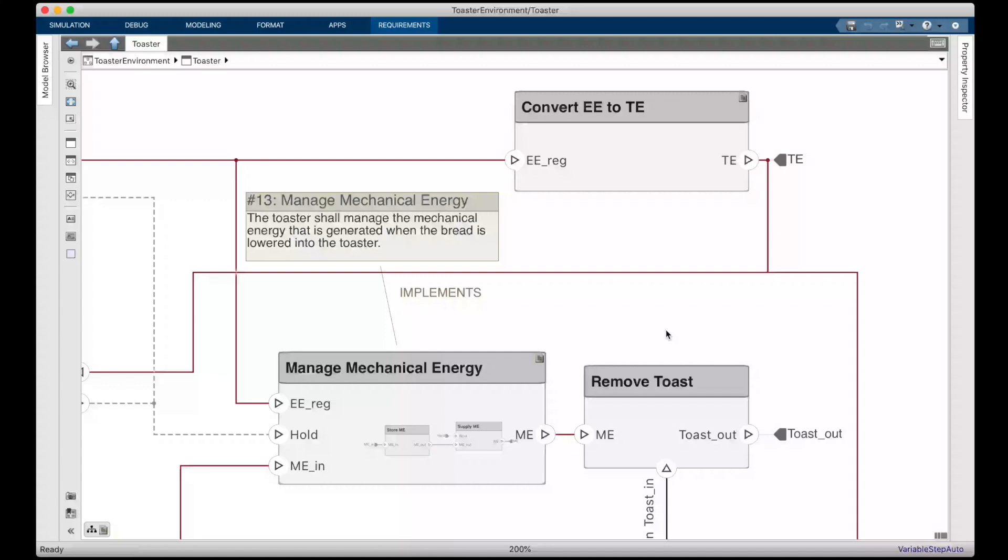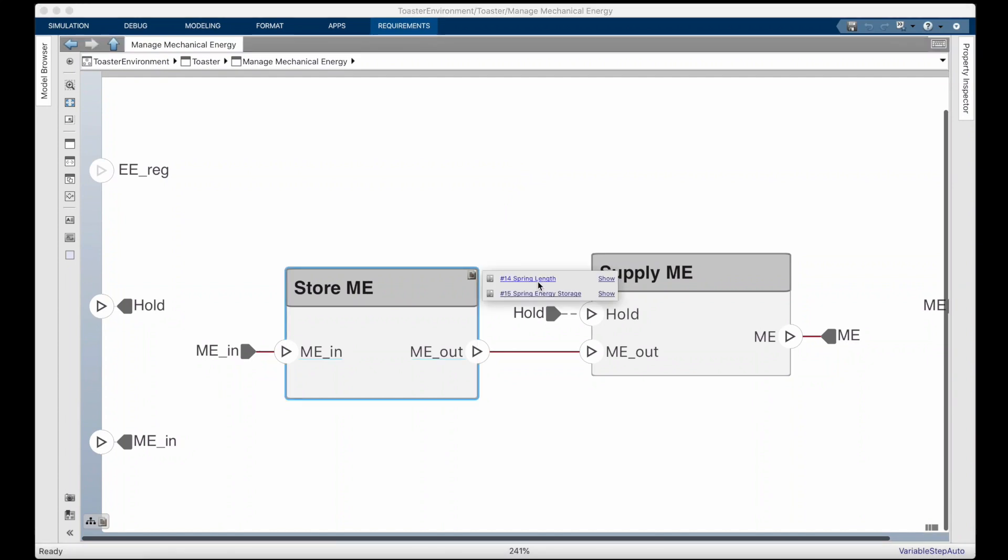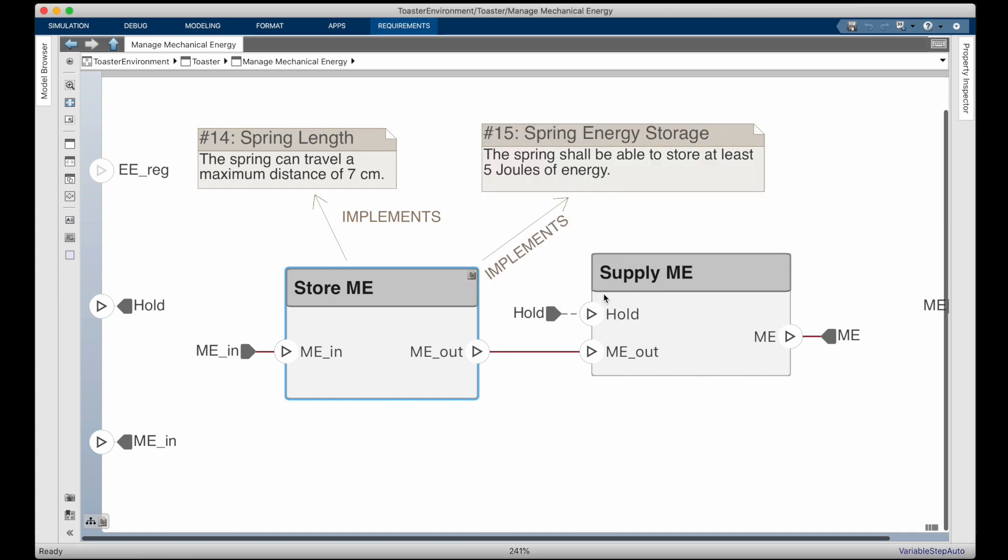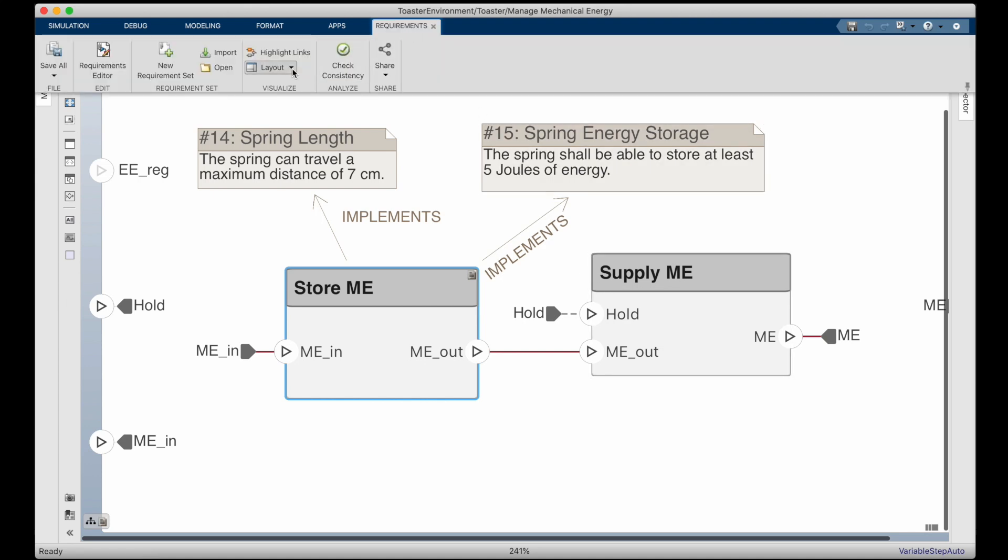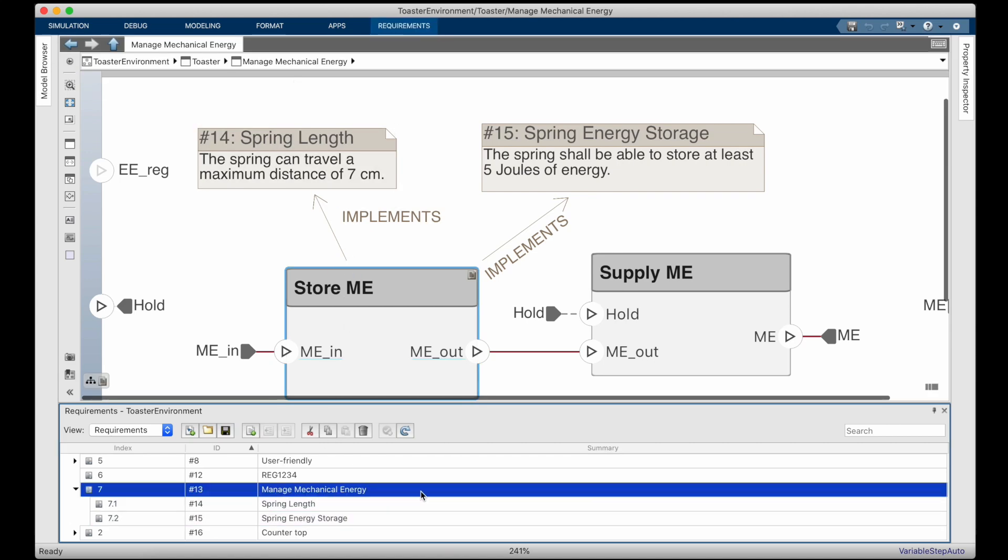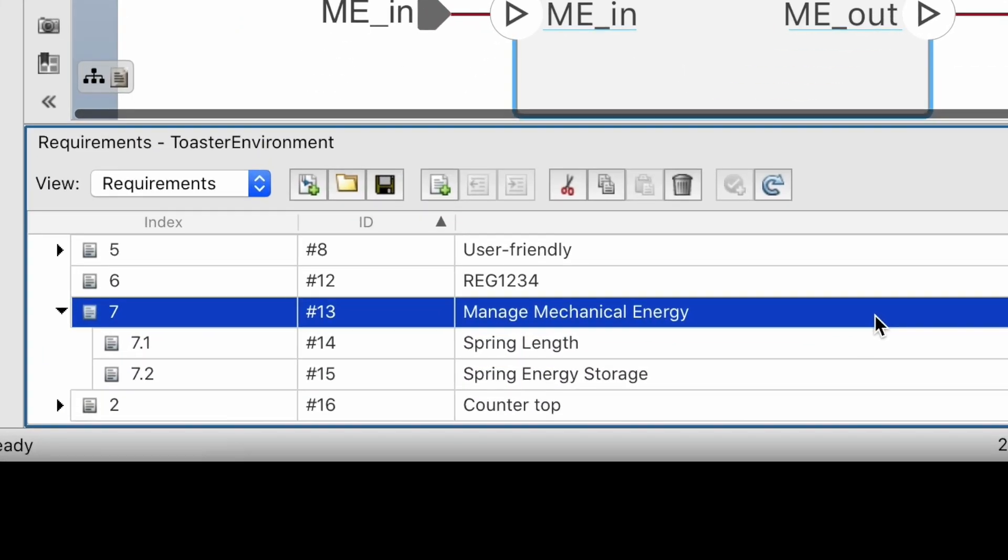We may make a design choice to store the mechanical energy in a spring. That's an implementation we've decided on, in which case we could write lower level requirements for the spring that state performance measures, like the maximum distance the spring can travel, and how much energy it needs to store. This would give us an idea of what kind of spring we need to design or purchase. So hopefully you can start to see the back and forth between further refining the requirements and further refining the design. And stacking all of these parent and child requirements together forms a hierarchy. You can see how spring length and spring energy storage are both child requirements to managing mechanical energy.